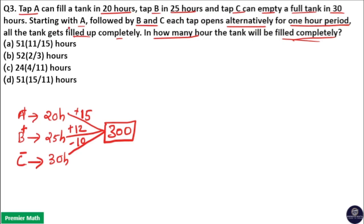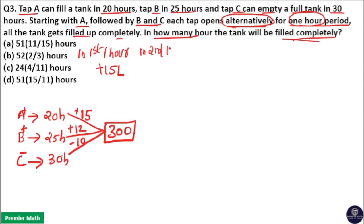In this question, starting with A followed by B and C, each tap opens alternatively for one hour period. That means in the first one hour, Tap A opens and fills 15 liters. In the second one hour, Tap B opens and fills 12 liters. And in the third one hour, Tap C opens and empties 10 liters.